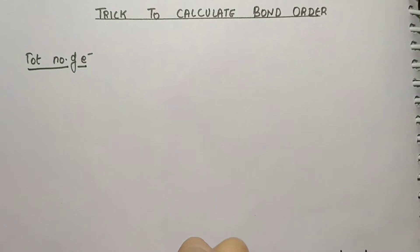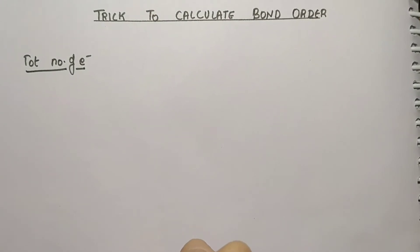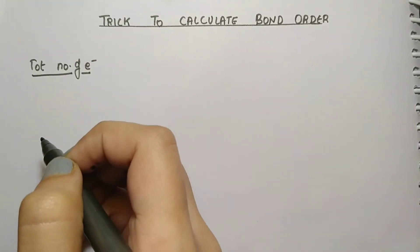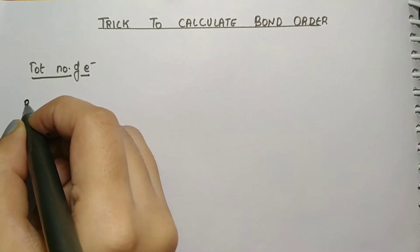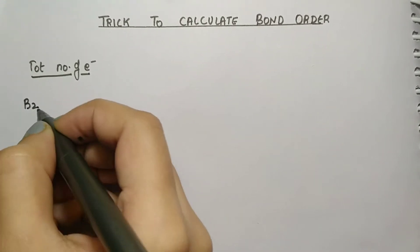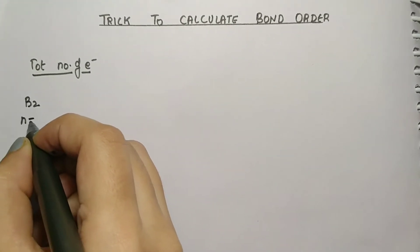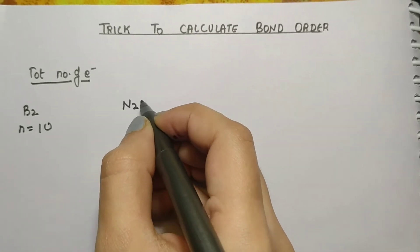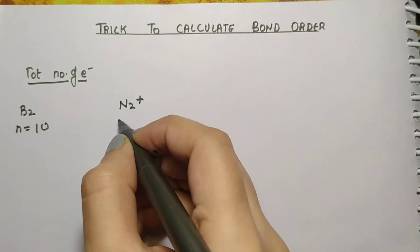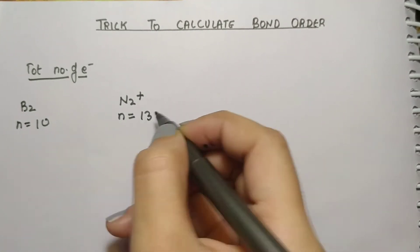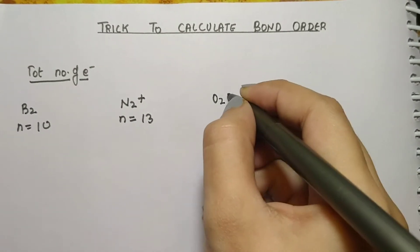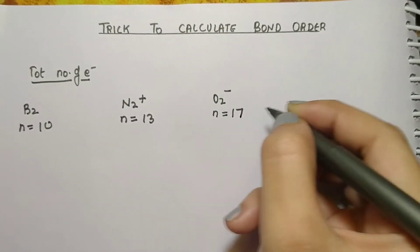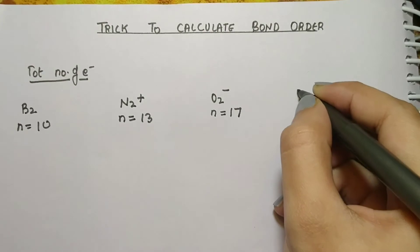First of all, we need to calculate the total number of electrons — remember, it is the total number of electrons and not the valence electrons. For example, if we have B2 molecule, the total number of electrons will be 10. In case of N2 positive, the total number of electrons will be 13. In case of O2 negative, the total number of electrons will be 17.